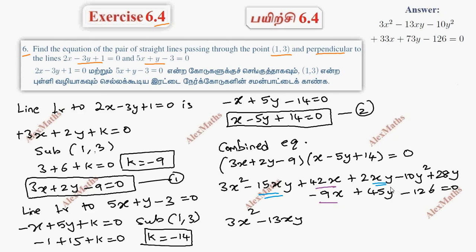For the x terms, 42 minus 9 equals 33x. For the y terms, 45 plus 28 equals 73y.